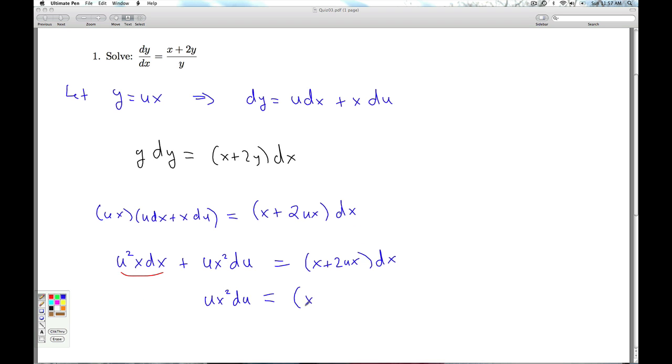So I'm going to have the x plus 2ux dx, which I already have over here, minus the u²x dx. And sure enough, I can factor out the x's on both sides. Excuse me, on this side. And I get (1 + 2u - u²) dx.